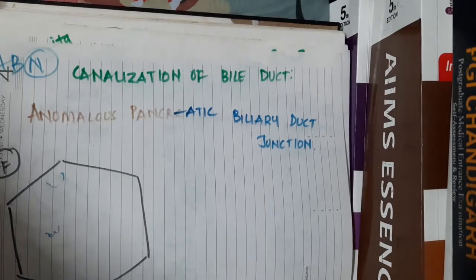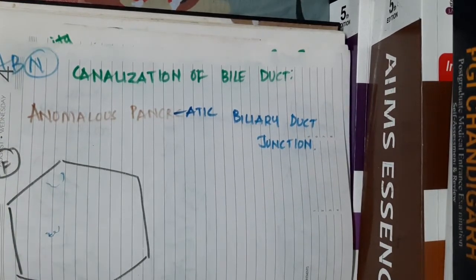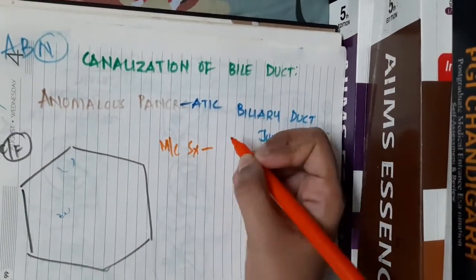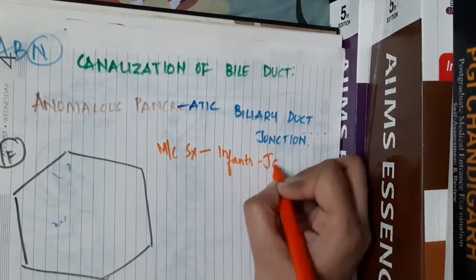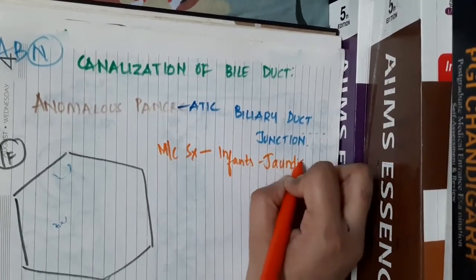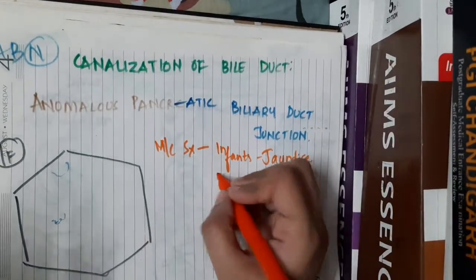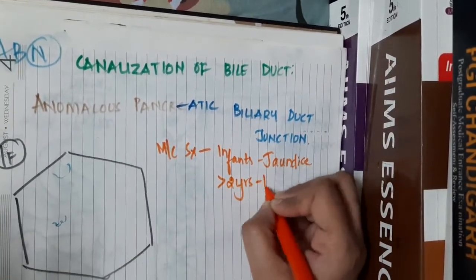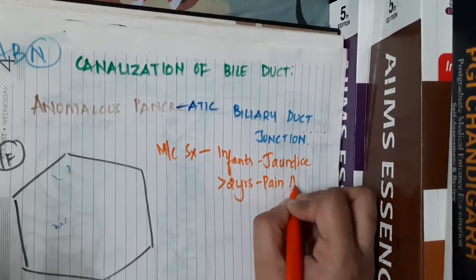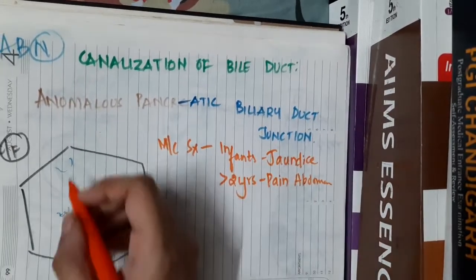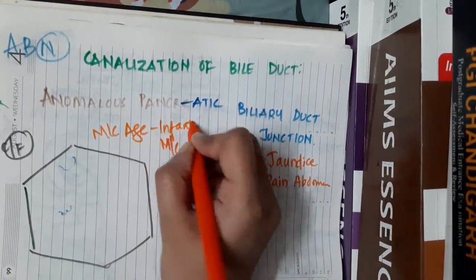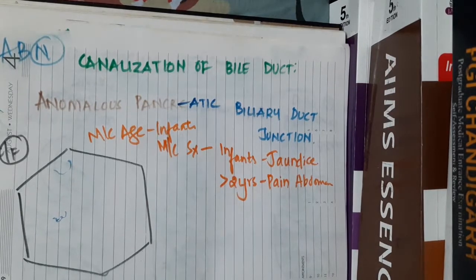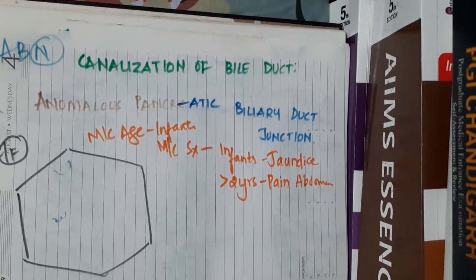Regarding clinical features, there are two key points to remember. The most common symptom in infants is jaundice, while in children more than two years of age the most common symptom is pain abdomen. The most common age of presentation is infants, followed by children.